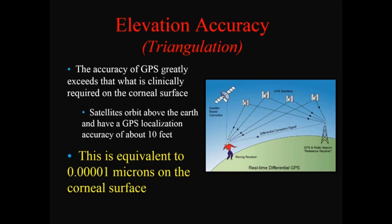If you think about it, triangulation is an extremely accurate method of localizing space. Almost all of us have GPS in our car. Standard GPS — not military — has a localization accuracy of about 10 feet. Going up to where those satellites are, that's roughly equivalent to about 0.00001 microns on the corneal surface if you use that same ratio. So triangulation is actually a very highly accurate method of localization.